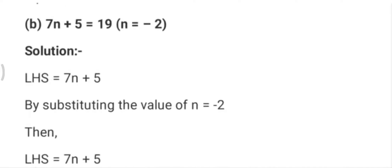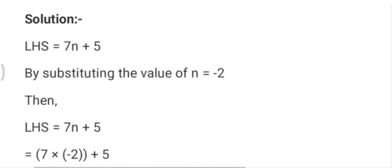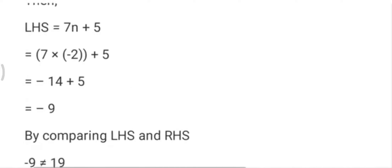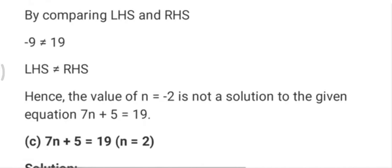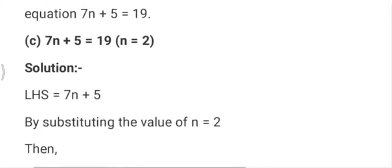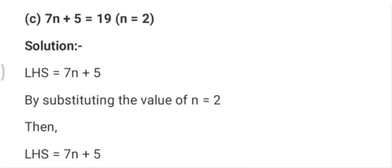In part b, 7m+5=19, here we put m=-2, so 7 into -2 is -14, plus 5 is -9. That is not equal to 19, so m=-2 is not the solution.